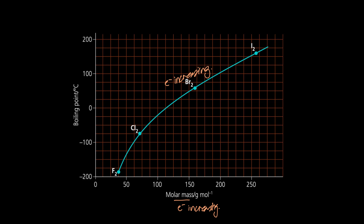This is why iodine is a solid while chlorine is a gas — iodine has more electrons, so its instantaneous dipole to induced dipole attraction is stronger than in chlorine. On the graph, fluorine and chlorine have boiling points below 0°C, and room temperature is about 25°C, so they are gases. Bromine's boiling point is above room temperature, so it is a liquid. That explains why fluorine and chlorine are gases and bromine is a liquid at room temperature.